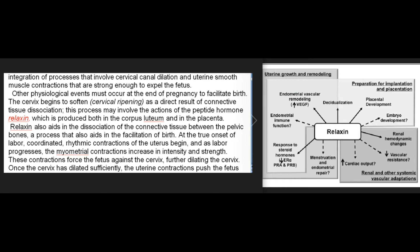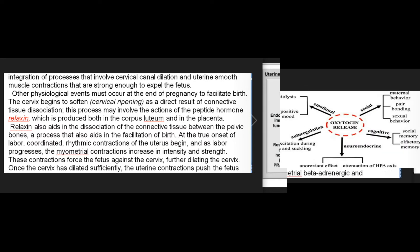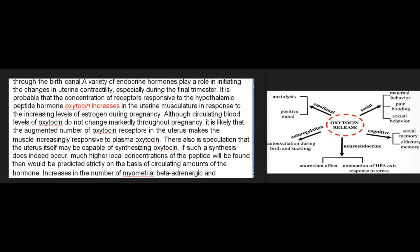Once the cervix has dilated sufficiently, the uterine contractions push the fetus through the birth canal. A variety of endocrine hormones play a role in initiating changes in uterine contractility, especially during the final trimester. It is probable that the concentration of receptors responsive to the hypothalamic peptide hormone oxytocin increases in the uterine musculature in response to the increasing levels of estrogen during pregnancy.